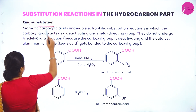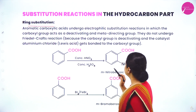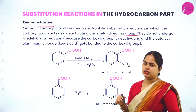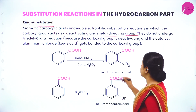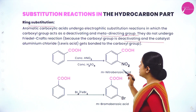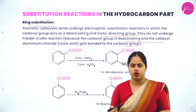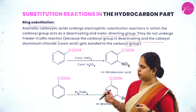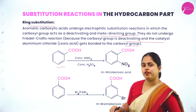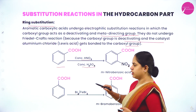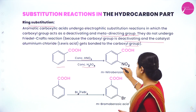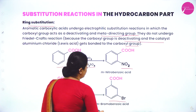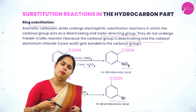Ring substitution: aromatic carboxylic acids undergo electrophilic substitution reactions in which the carboxylic group acts as a deactivating and meta-directing group. They do not undergo Friedel-Crafts reaction because the carboxylic group is deactivating and the catalyst AlCl₃ gets bonded to the carboxyl group. For example, nitration of benzoic acid with concentrated HNO₃ and H₂SO₄ places the nitro group at the meta position; similarly, halogenation also occurs at the meta position.